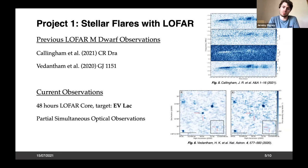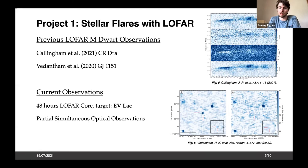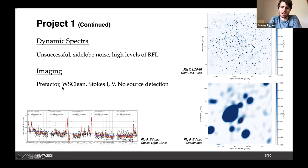I'm using 48 hours of dedicated LOFAR core observations targeting the highly active flare star EV Lac, with partial simultaneous optical observations from a telescope in Crimea. We've tried imaging this field and haven't detected the star yet, but we're planning direction-dependent imaging to better calibrate the field and reduce the noise floor. There's a snippet of the optical observations where flares were detected during this time.